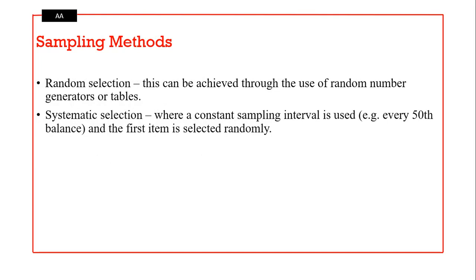Sampling methods in detail: Random selection can be achieved through the use of random number generators or tables. Auditors use this method to improve unpredictability in auditing, so that there is a fair chance of touching as many variables within the entire population, thereby avoiding bias in sampling.